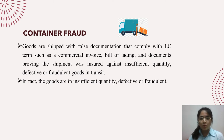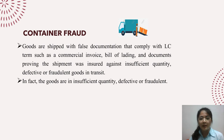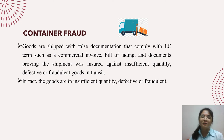The second fraud is container fraud. The goods are shipped by the seller with fraudulent documents that comply with the Documentary Credit terms — such as commercial invoice, bill of lading, and other documents — but prove the shipment was of insufficient quantity, defective, or fraudulent goods in transit. The seller presents these fraudulent documents to the advising bank, which checks and, if found in order, pays the seller. The advising bank sends the documents to the issuing bank, which pays on behalf of the buyer. But in fact, the goods do exist but are in insufficient quantity, defective, or fraudulent condition.